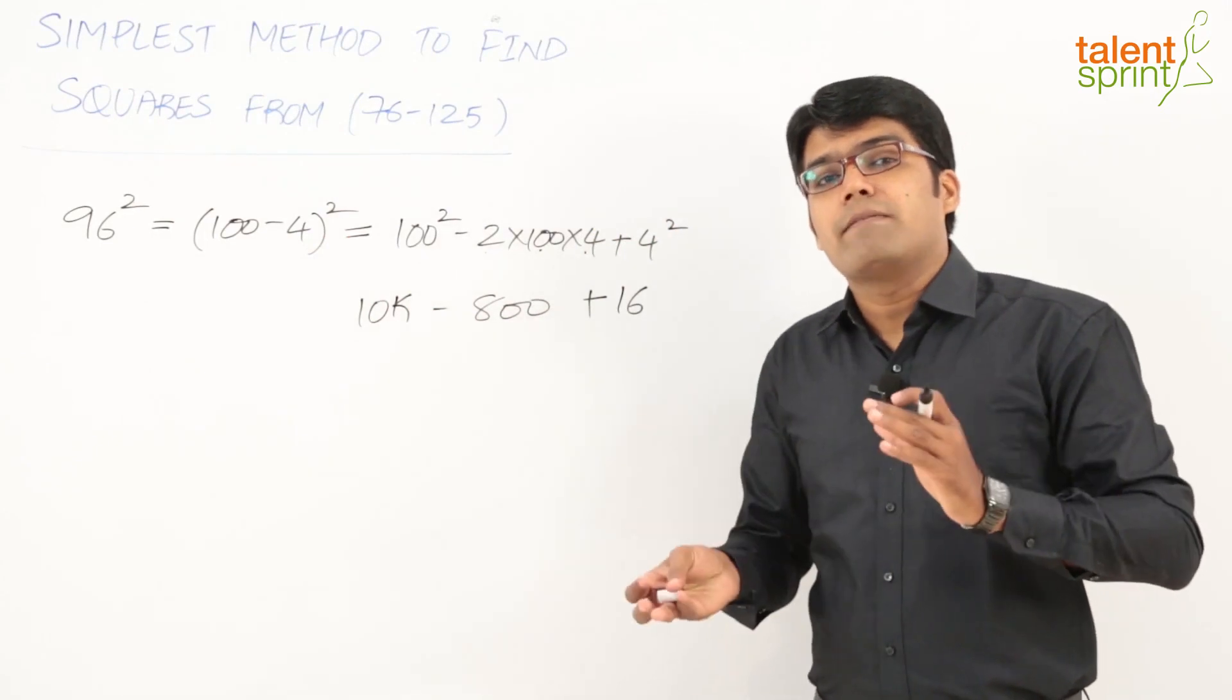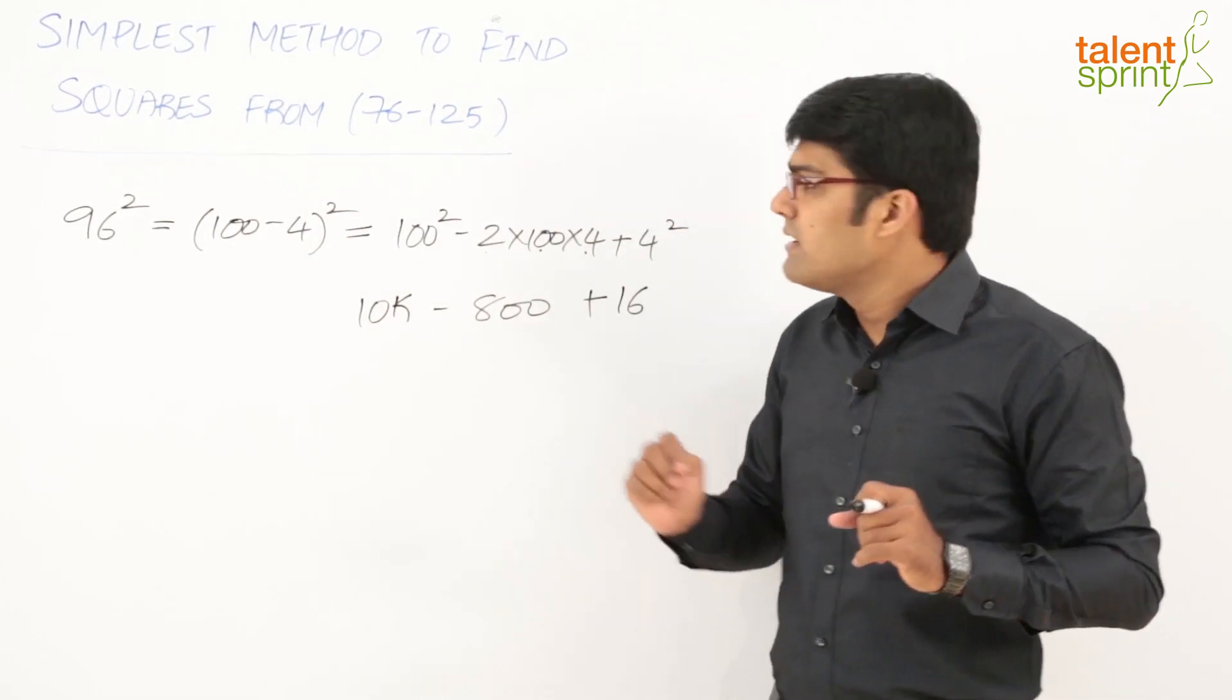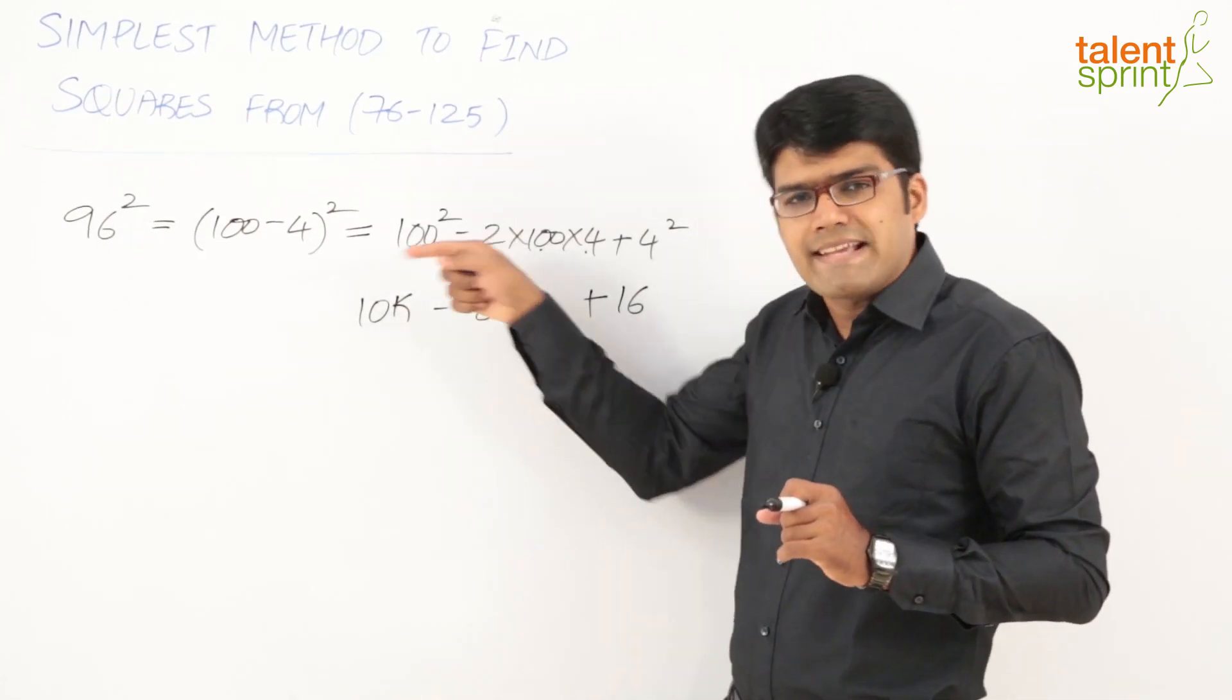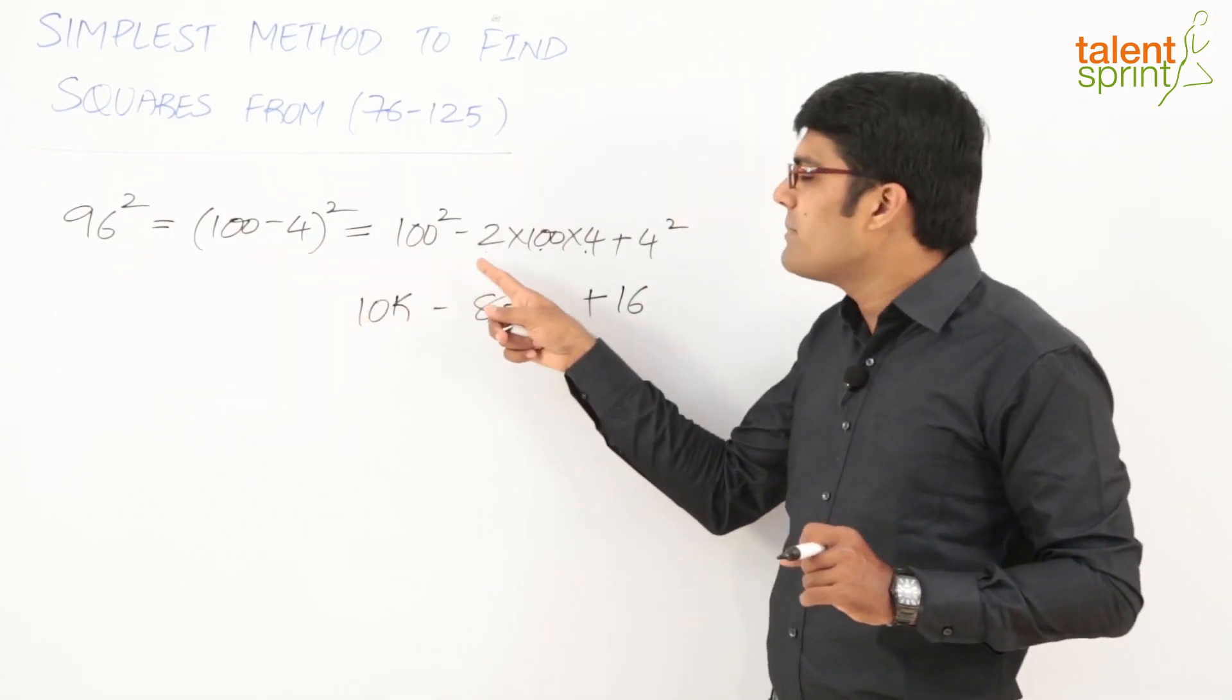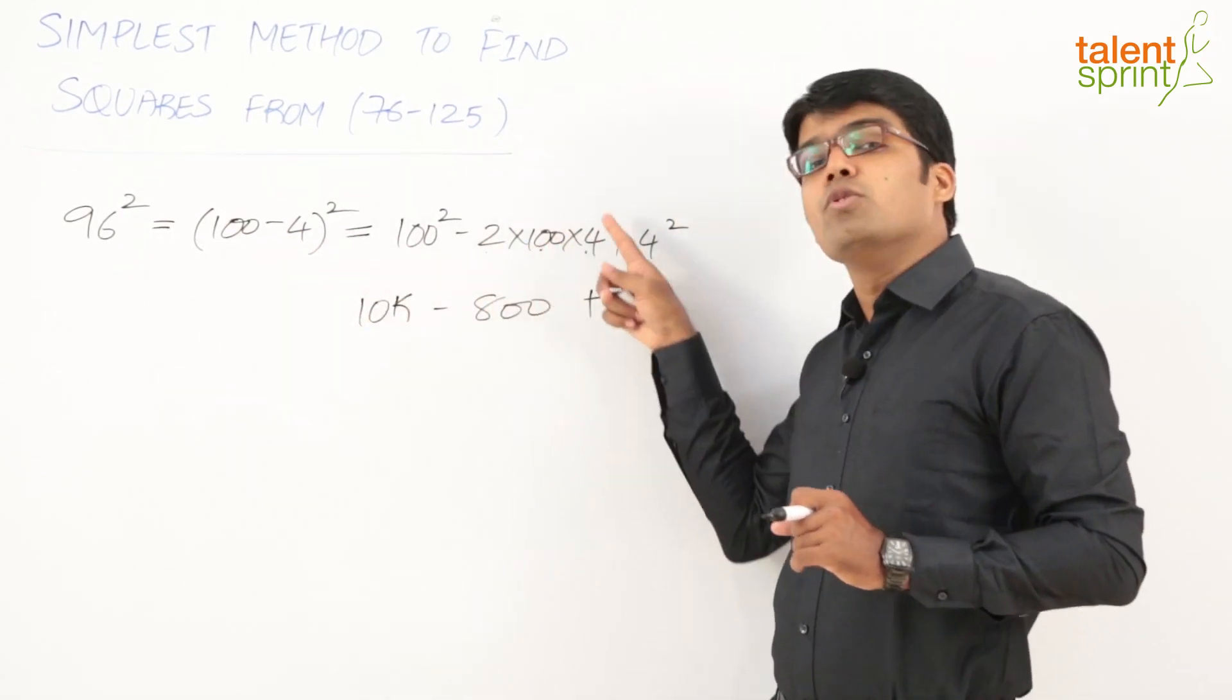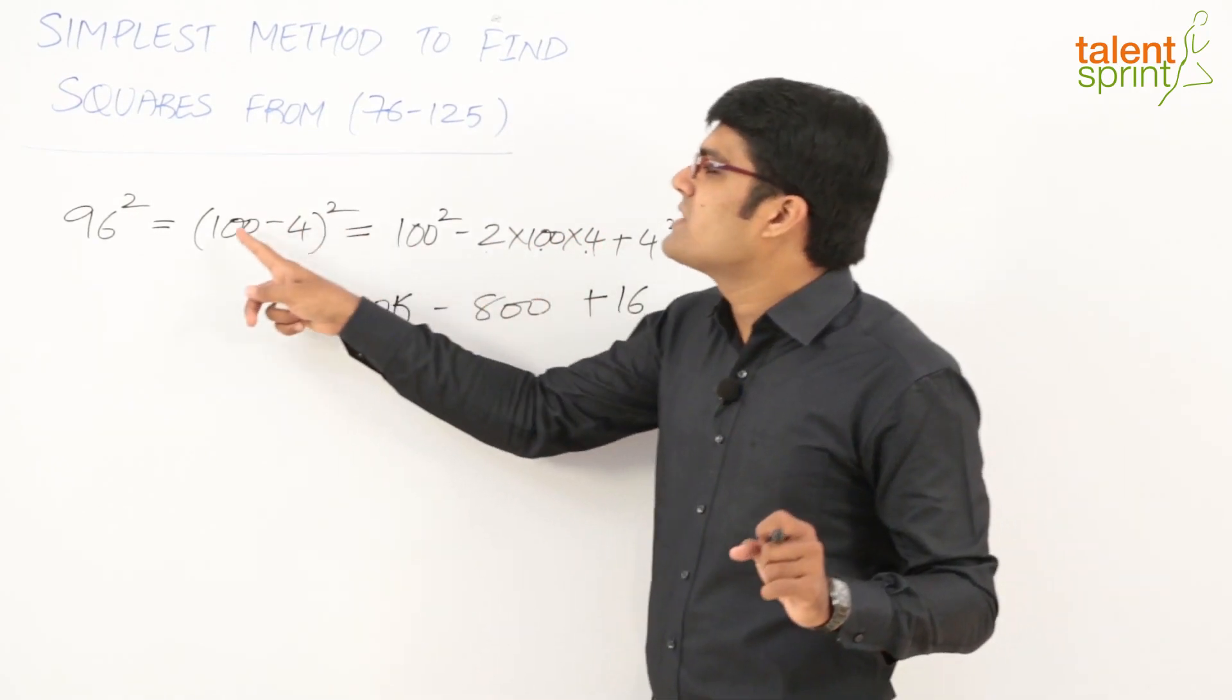Now how do we understand this in an easy fashion? Look at it: when the number is between 26 to 75, we had always split it as 50 plus or minus x, so 2×50×x was the second part. But here we already have a as 100, so the 2ab part becomes 2×100×4 = 800. That means if it is 50 - 4, we would have directly taken -400. That's the technique.